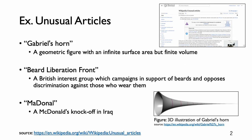I will show you some examples of unusual articles. First, Gabriel's Horn. A Gabriel's Horn is a type of geometric figure that has infinite surface area but finite volume. Second, Beard Liberation Front. The Beard Liberation Front is a British interest group which campaigns in support of beards and opposes discrimination against those who wear them. Third, Madonao. Madonao is a restaurant located in Iraq. It is designed to resemble the fast food chain McDonald's both in appearance and in menu.